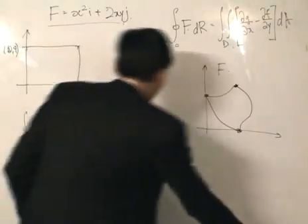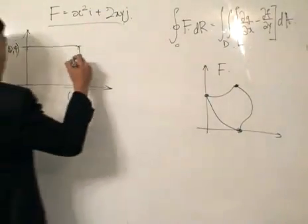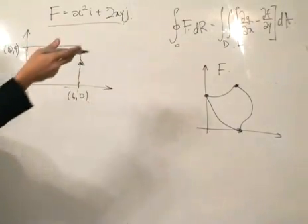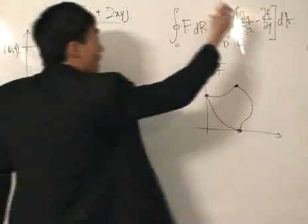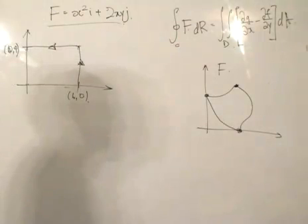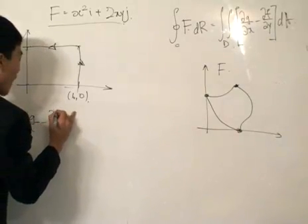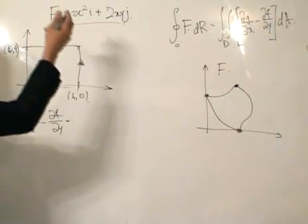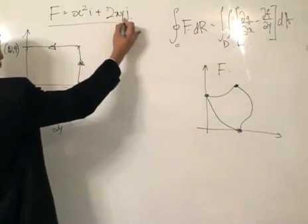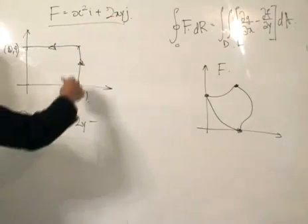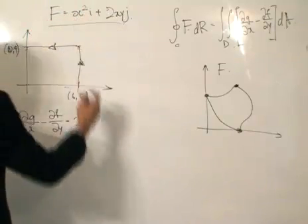You could do that. However, knowing that it's a simply closed, positively oriented, piecewise smooth loop, we can immediately apply Green's Theorem, which is much easier. It simplifies the problem to finding the first partial derivatives and taking the double integral. So we compute partial g partial x minus partial f partial y: differentiating g holding y fixed gives 2y, and differentiating f with respect to y holding x fixed gives zero since there's no y. So this equals 2y.